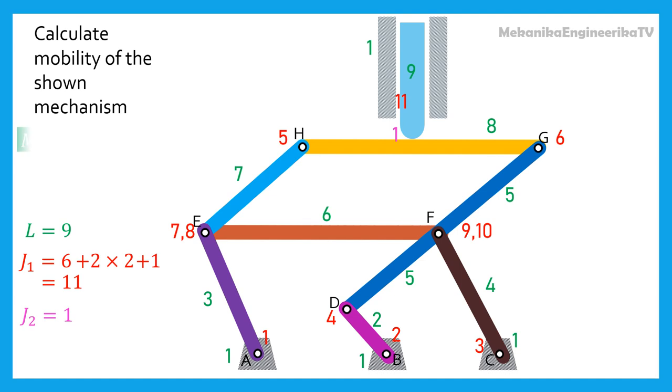Hence, mobility is equal to 3 times 8 minus 2 times 11 minus 1. The mobility of this mechanism is then equal to 1.